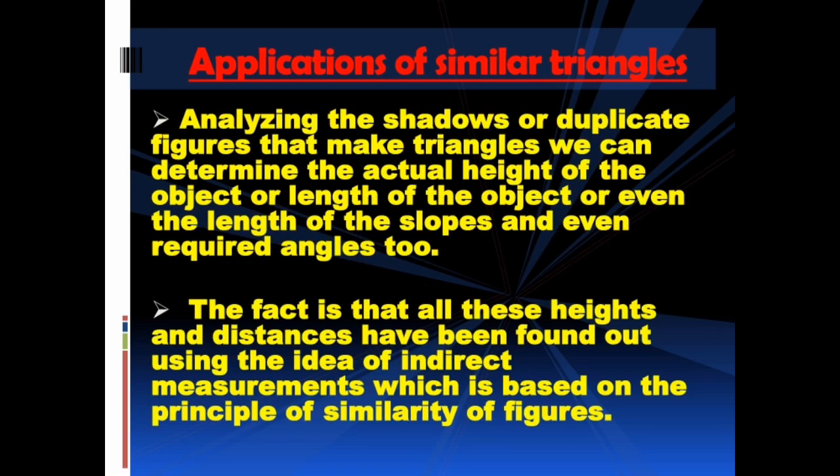Now we shall discuss the applications of similar triangles. Have you ever thought about how our ancestors measured distances, heights, and so on? By analyzing shadows or duplicate figures that make triangles, we can determine the actual height of an object, the length of an object, the length of slopes, and even required angles. The fact is that all these heights and distances have been found out using the idea of indirect measurements, which is based on the principle of similarity of figures.